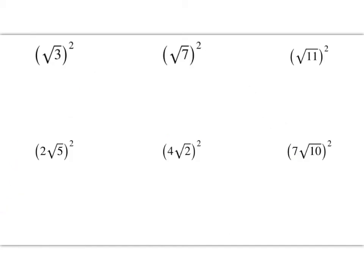For this next part, let's look at what happens when we square square roots. I have the square root of 3, squared. We know that something squared equals that times itself, so this is the square root of 3 times the square root of 3, which is the square root of 9. The square root of 9 is 3. When you square a square root, you end up with the radicand — the number under the radical — because square roots and squaring are inverse operations. They undo one another.